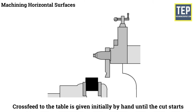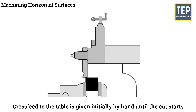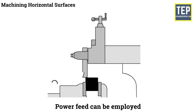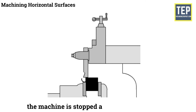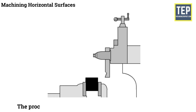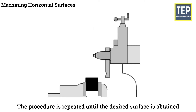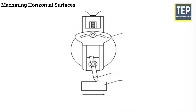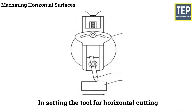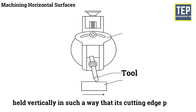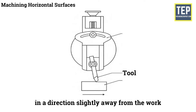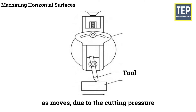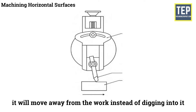Cross feed to the table is given initially by hand until the cut starts, after which power feed can be employed. After the cut is finished the machine is stopped and the work inspected. If more material is to be removed, the procedure is repeated until the desired surface is obtained. A special precaution is required: the tool should be held vertically so that its cutting edge points slightly away from the work, so that as it moves due to cutting pressure it will move away from the work instead of digging into it.